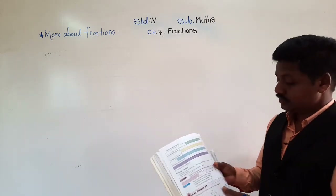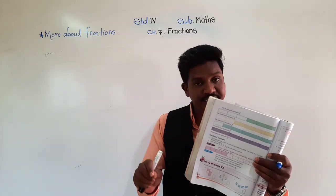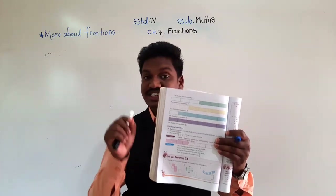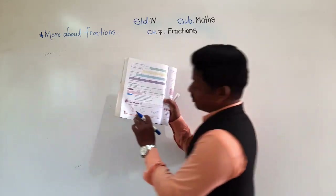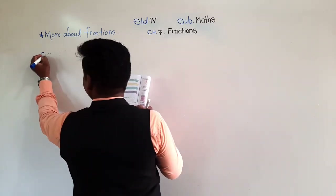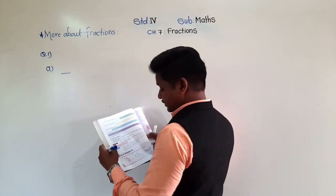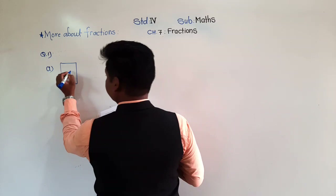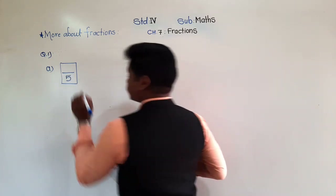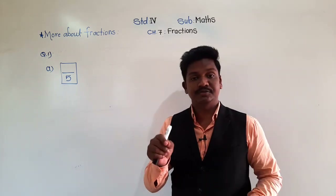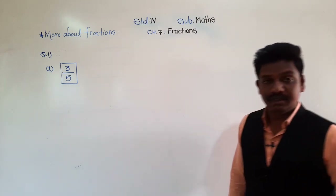See the first question. Some figures are given, divided into equal parts, and some parts are shaded and some unshaded. We have to write the fraction for the shaded portion. See the first figure in your textbook. Question 1A: the first figure is divided into how many equal parts? Count total equal parts — 1, 2, 3, 4, 5 — 5 parts are there. That goes below the bar. Count shaded parts: 1, 2, 3 — three parts are shaded. Write that above. So 3 fifths is the fraction for the shaded portion.